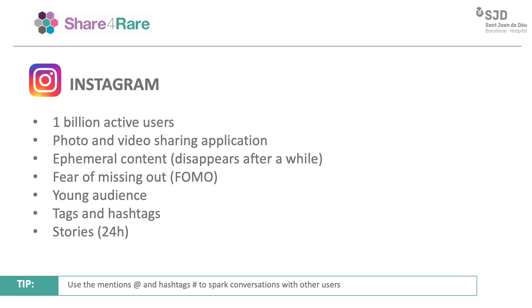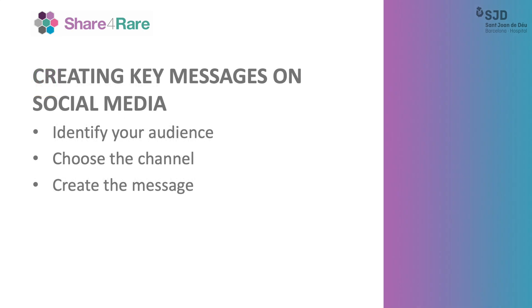Last but not least, there is Instagram, a photo and video sharing mobile app. It is the social network preferred by teenagers, but the user age range is wide. It gives you the opportunity to add filters and other modifications to your pictures. The content on the timeline is very ephemeral, but even more ephemeral are Instagram stories, which are eliminated from your profile after 24 hours. However, these stories have become quite popular and are a useful tool to spread news, and you can check which users interact with what you publish.